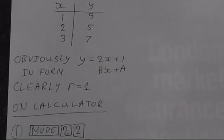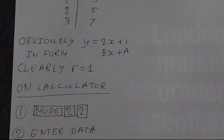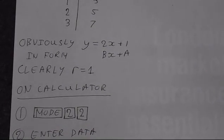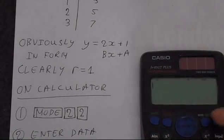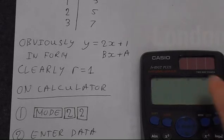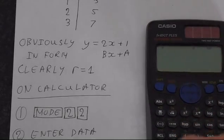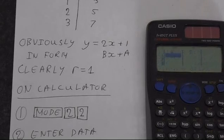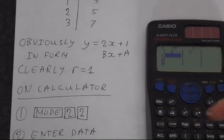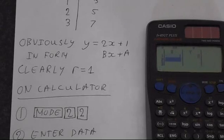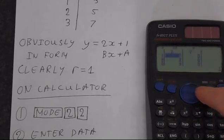So let's go ahead and do this on the calculator. First thing we're going to do is put in the correct stats mode. So we're going to press mode, then 2, and we want a plus bx. So that's pressing 2 again. So let's enter our data. So we've got 1, 2, 3. If you enter your x first it's a lot more simple.